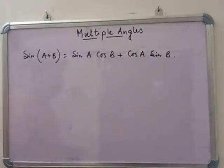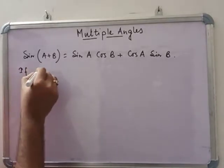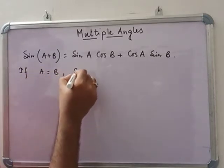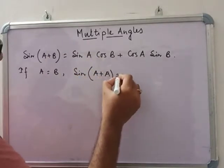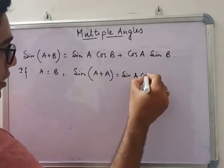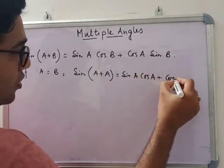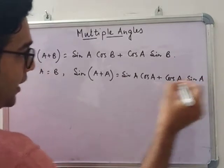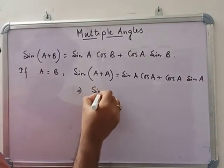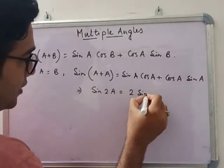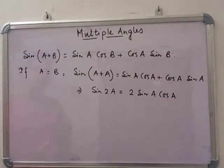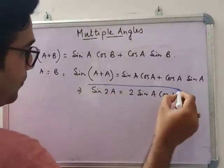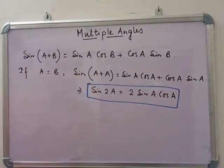Now if A and B are equal angles, then sin(A + A) = sin A cos A + cos A sin A, which implies sin 2A = 2 sin A cos A. So sin 2A = 2 sin A cos A is the formula of sin 2A.